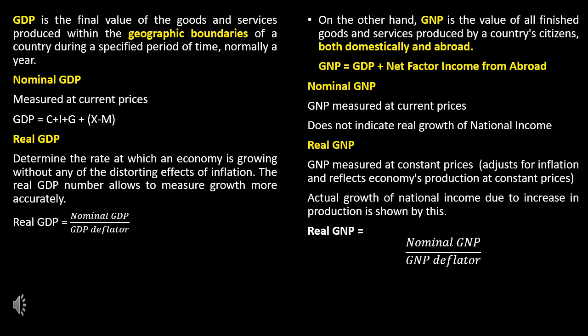Nominal GDP is measured at current prices. GDP is equal to C plus I plus G plus X minus M, where C is the consumption expenditure, I is the investment, G is the government expenditure, and X minus M is the net exports — X is exports and M is imports.